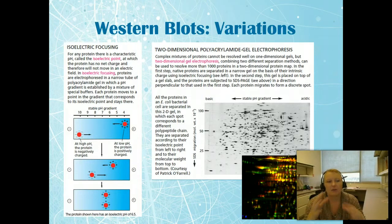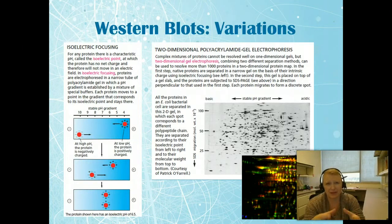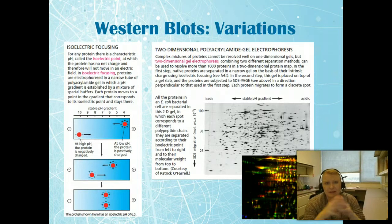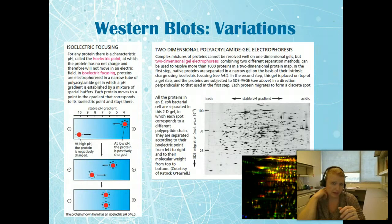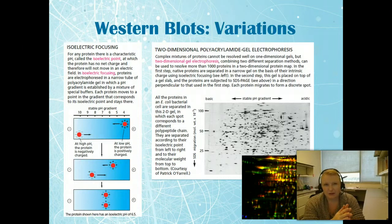There's a place in which the proteins become a neutral charge within a pH range and this helps us separate those proteins by pH rather than size. If we combine both of these techniques, separating by pH and separating by size, we then get a two-dimensional western blot. This allows us to see a lot more specificity in the proteins.